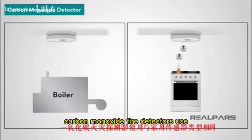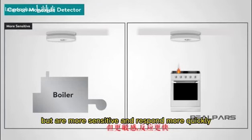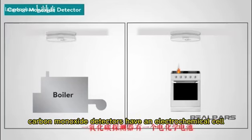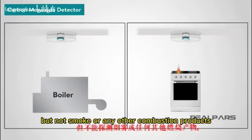Carbon monoxide fire detectors use the same type of sensor as those in the home, but are more sensitive and respond more quickly. Carbon monoxide detectors have an electrochemical cell, which senses carbon monoxide, but not smoke or any other combustion products.